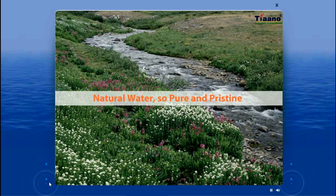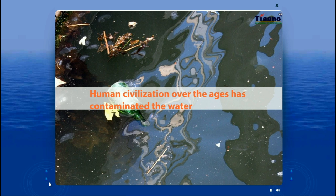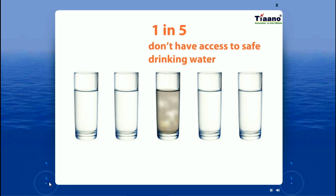Natural water is so pure and pristine, but human civilization over the ages has contaminated it by discharging various pollutants and disease-causing pathogens. Because of water pollution, 1 in 5 people don't have access to safe drinking water.